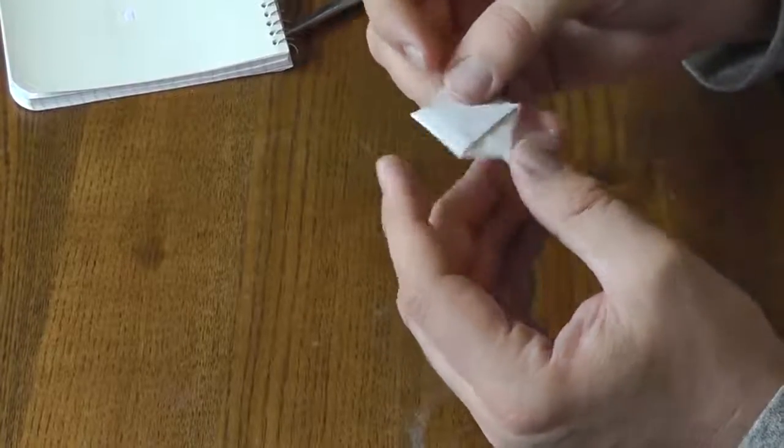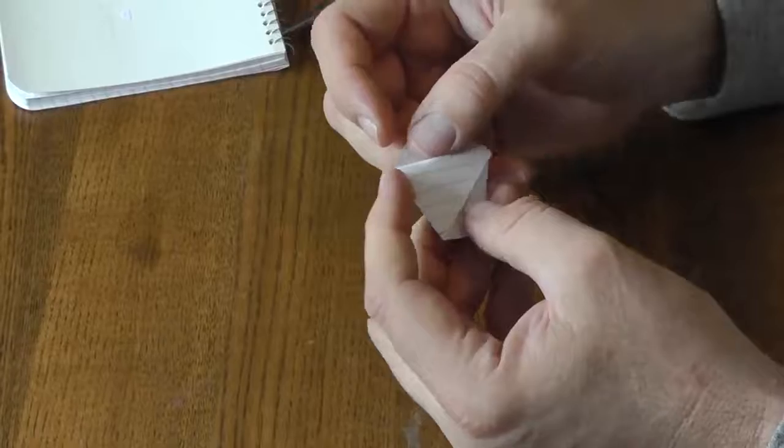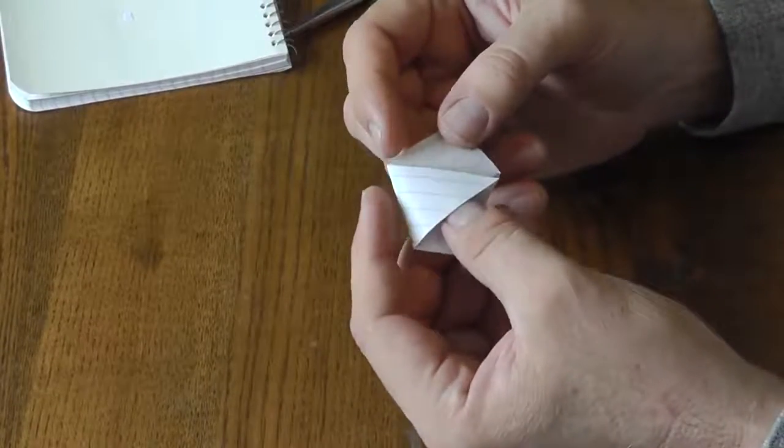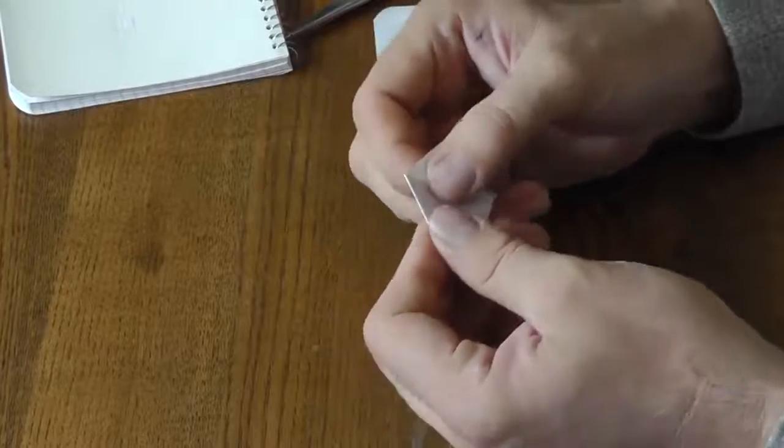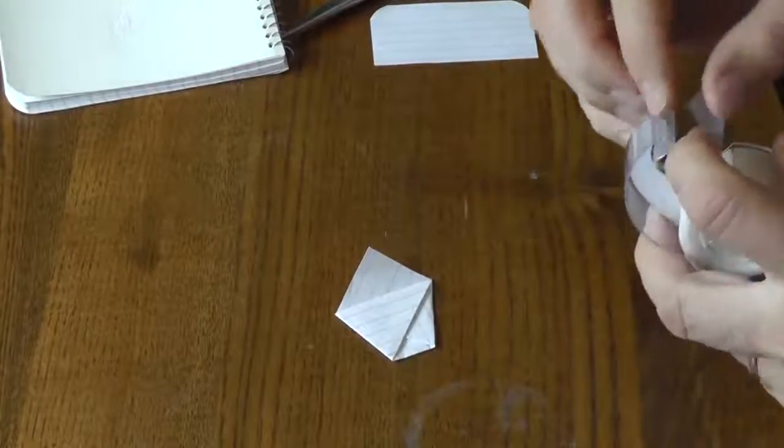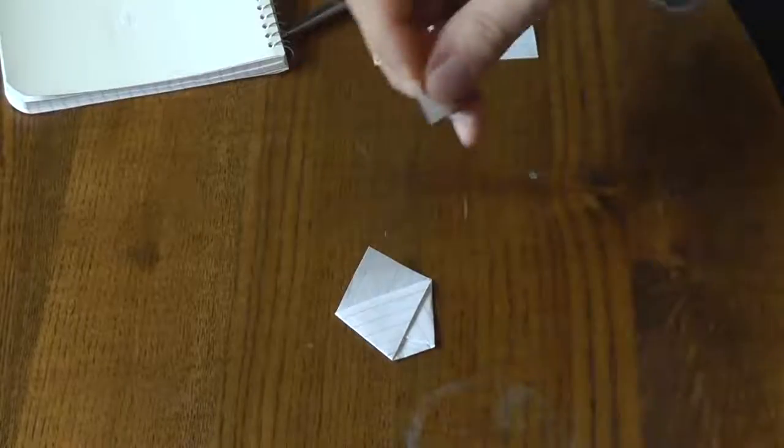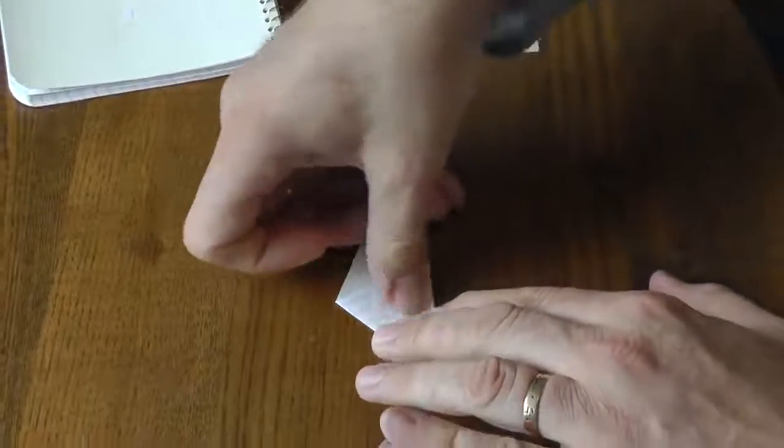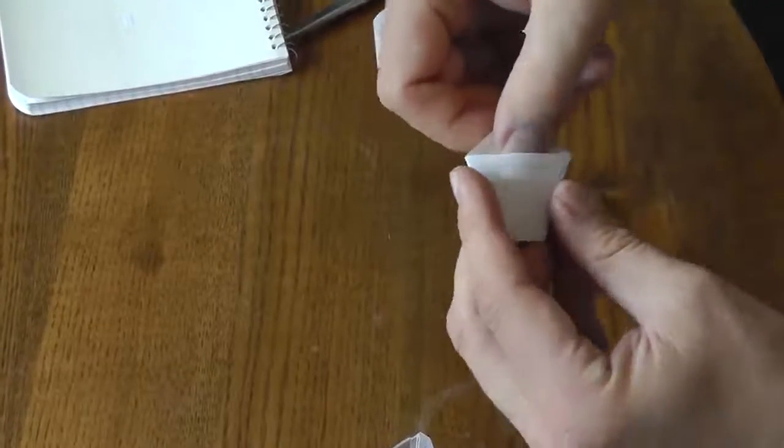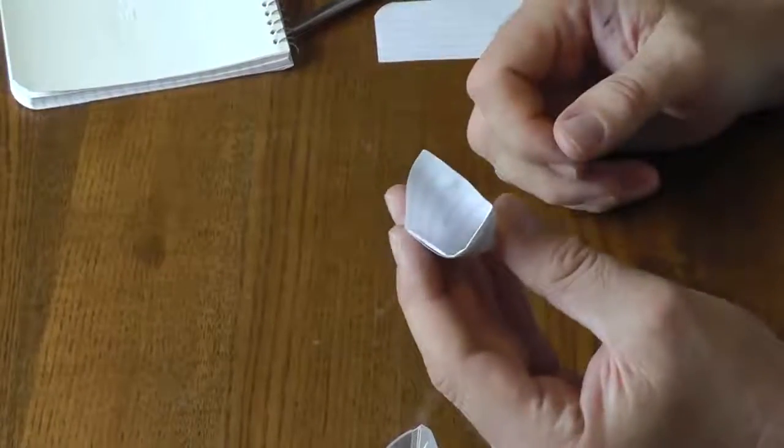But what I do is, whenever I have a piece of tape with me - you don't have to have tape - but I don't trust this, this could get caught and it could pull out. And I know with origami using tape is against the rules, but I always take a little piece of tape if I have it and just tape that outer piece down. That way it won't pull out. And there's my little envelope.